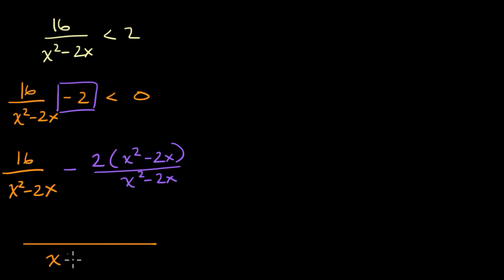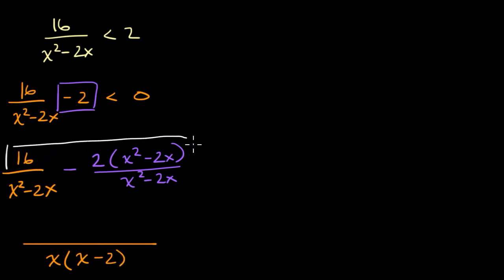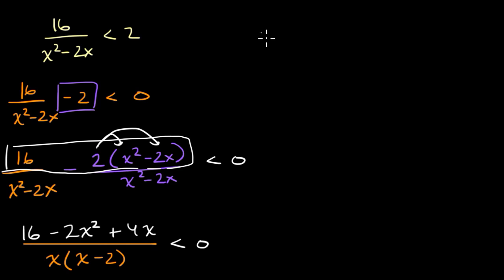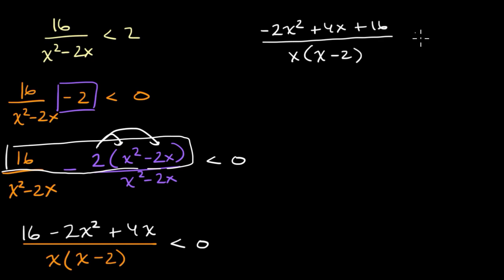I'm going to have to factor the denominator eventually, so let me just factor it right now as x times (x minus two). In the numerator, I have 16, and then distributing the two: minus two x squared, plus four x. So the numerator in standard form is minus two x squared plus four x plus 16, all over x times (x minus two), less than or equal to zero.